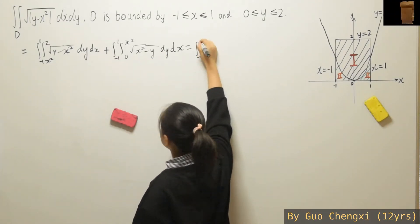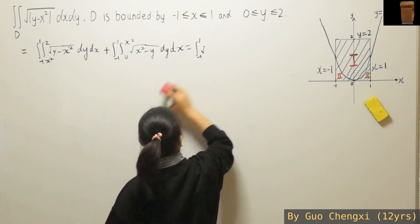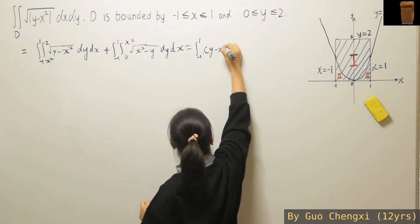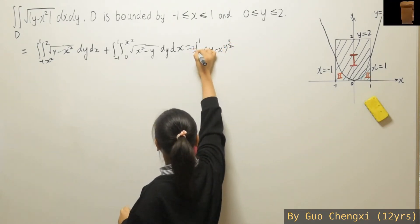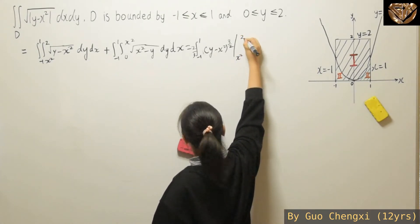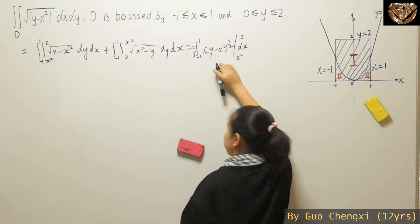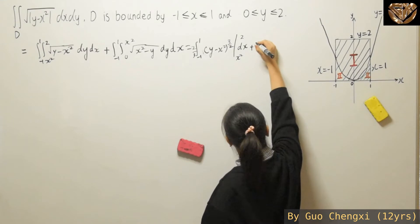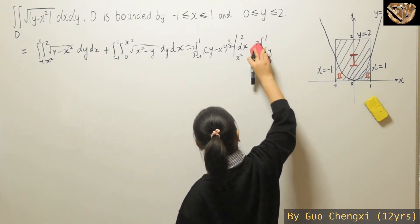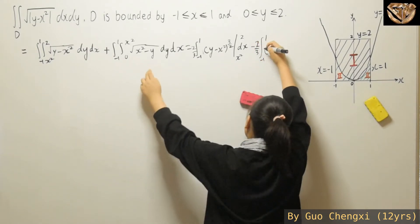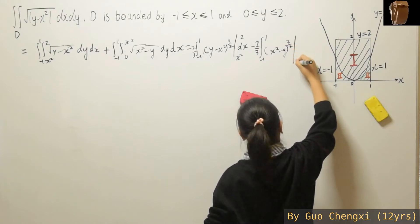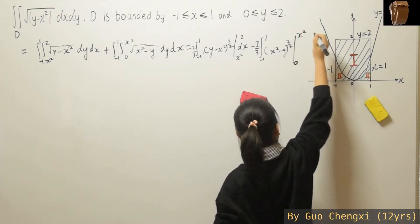So we can integrate the square root already. We'll get a 2 over 3 out front. For the negative part, we need a minus, because y has a negative in front, so you get x squared minus y, raised to the power of 3 over 2, evaluated from 0 to x squared, dx.